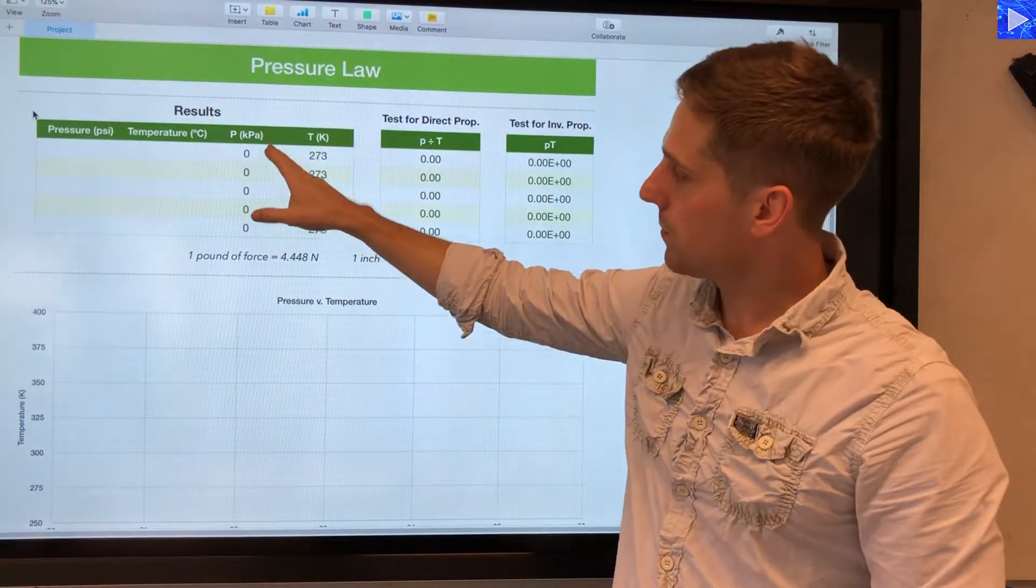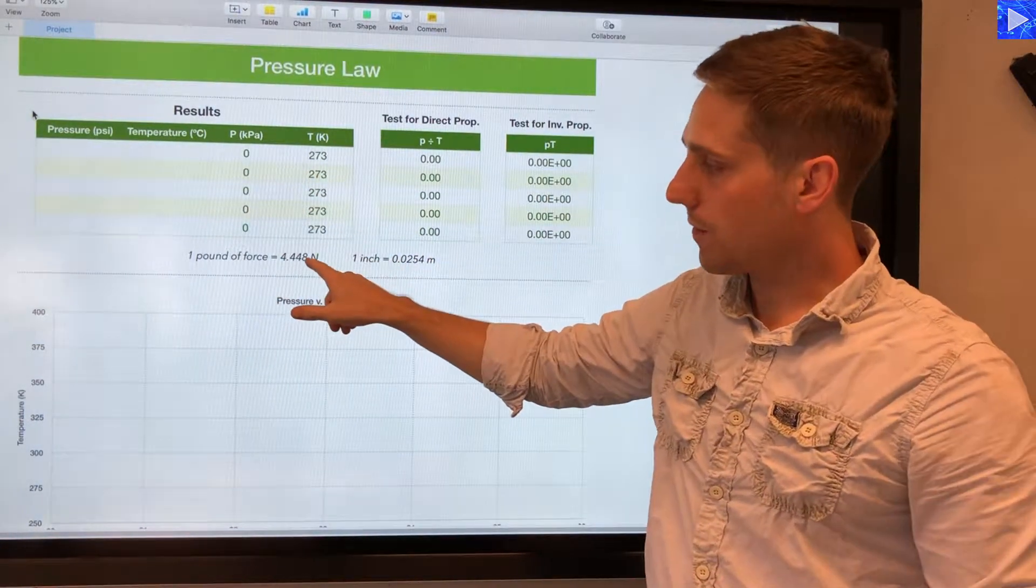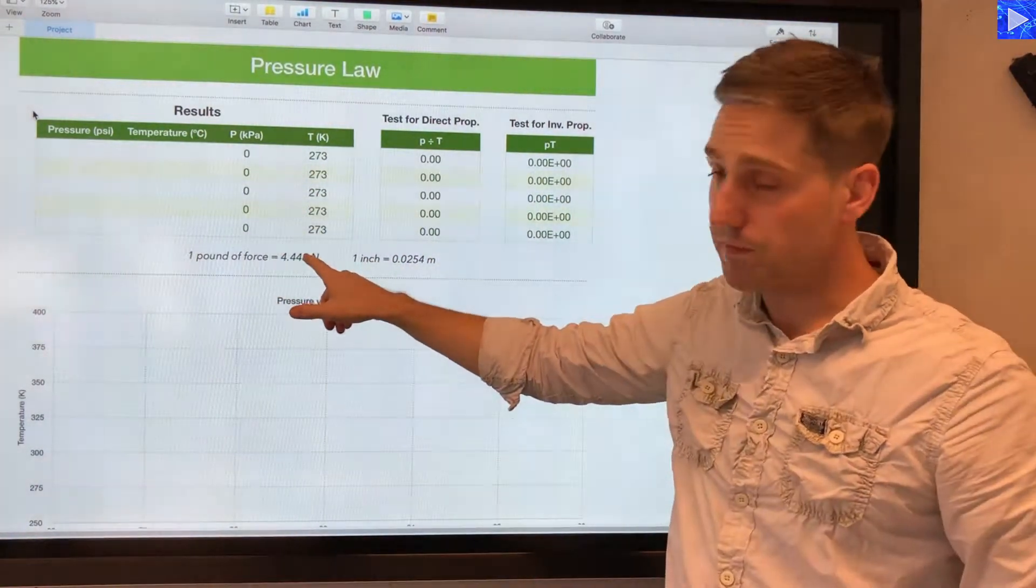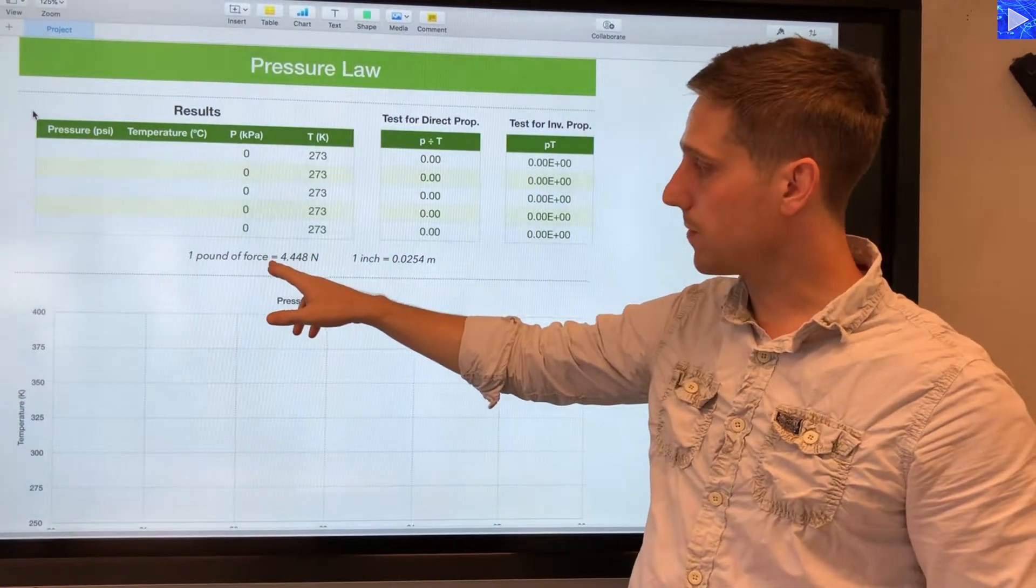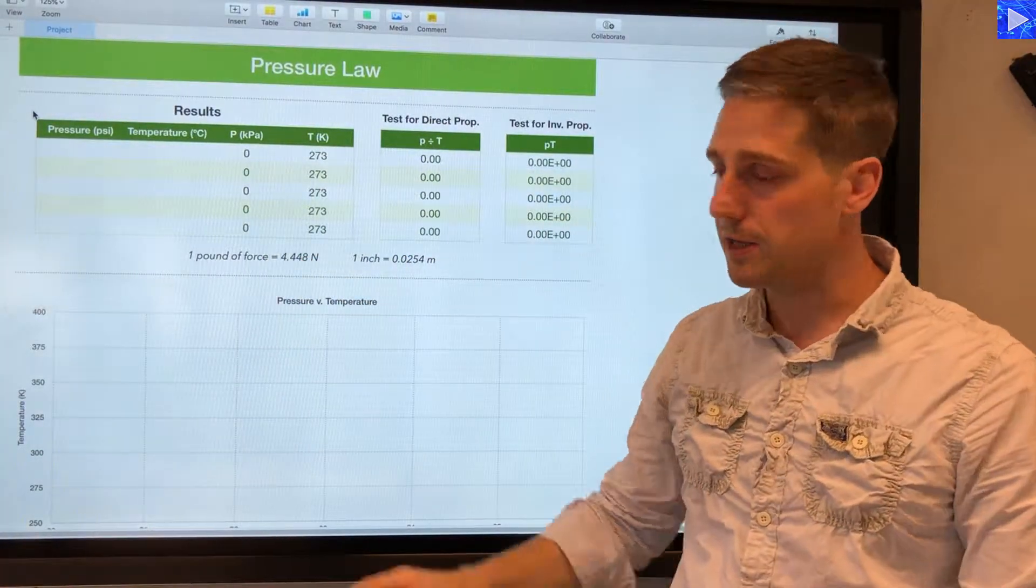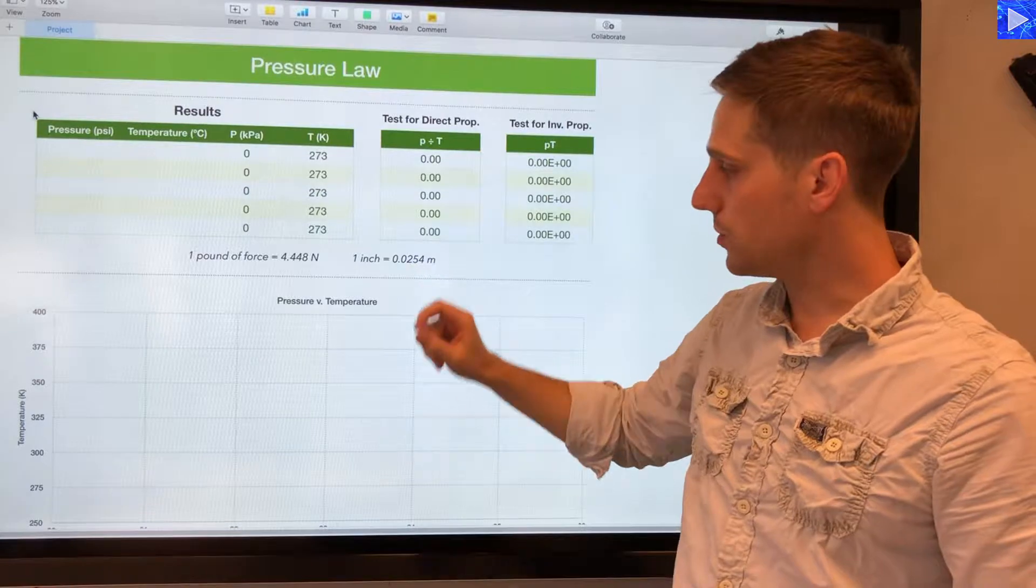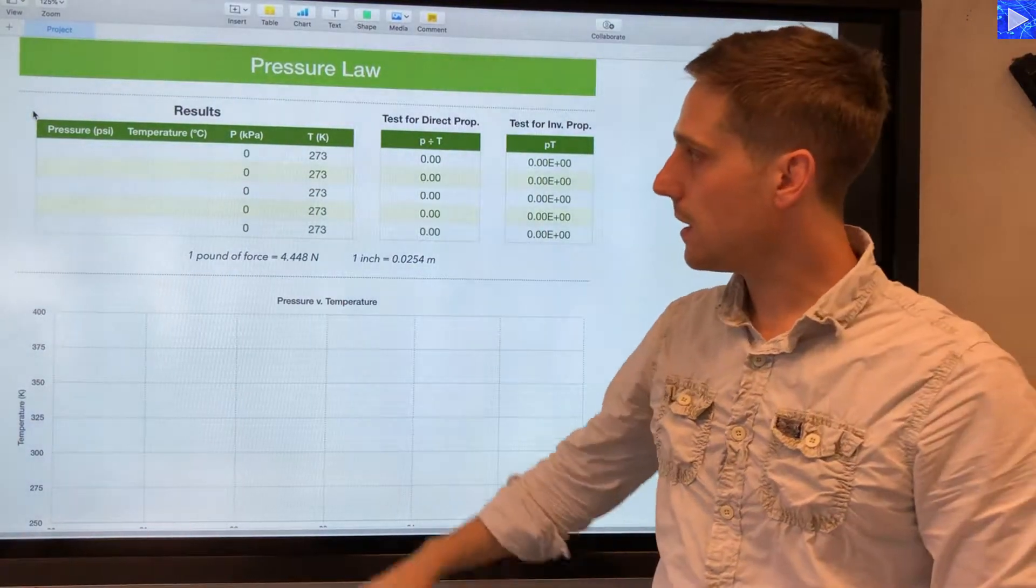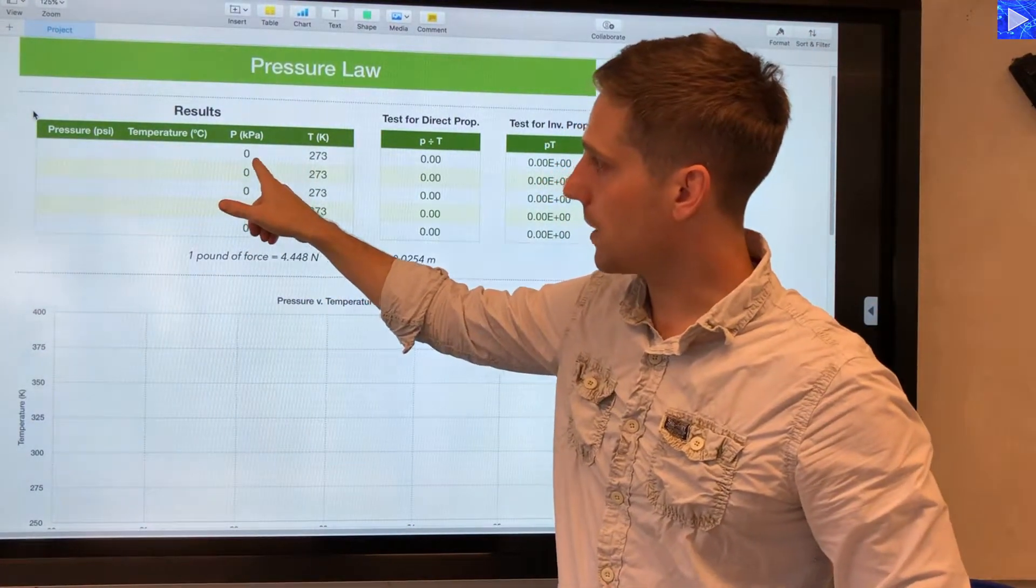I then perform a conversion into kilopascals and Kelvin. I've noted here the conversion factors for the pressure, so one pound of force is 4.448 newtons, one inch is 0.0254 meters, so I'll be using that in this calculation here.